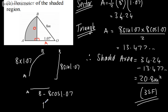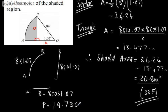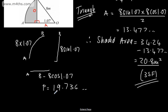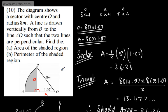That is going to give me 19.736. So we can say now P is equal to 19.7, and that is going to be metres, and again given to three significant figures. So that's all we've done to find the perimeter of the shaded region.